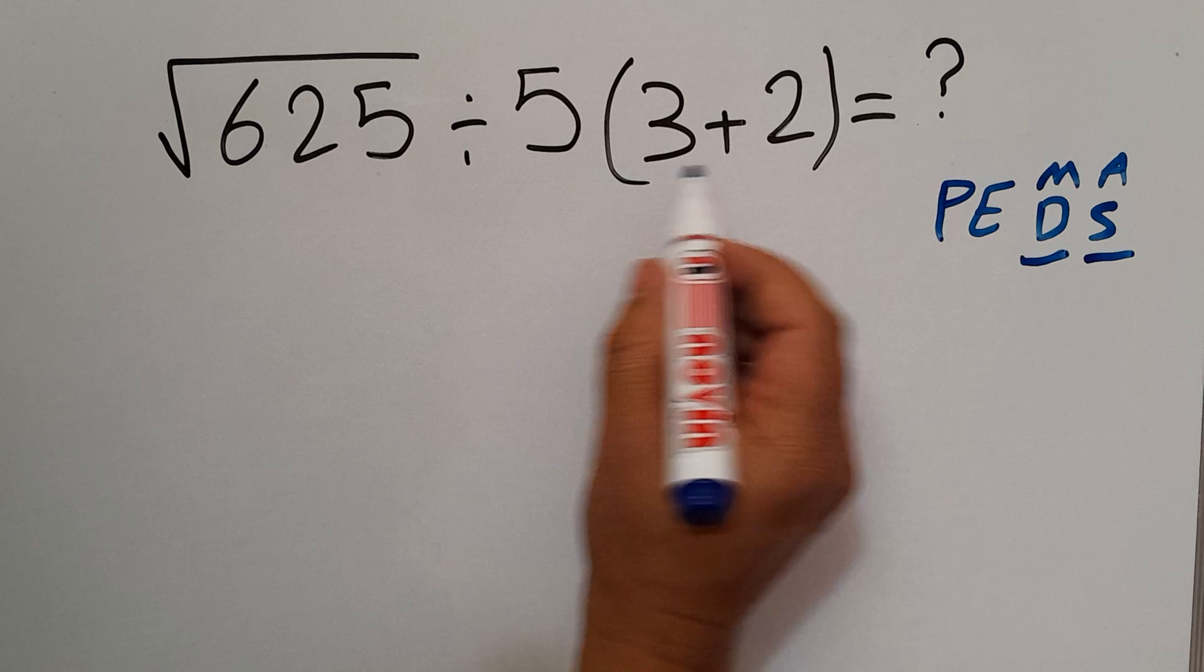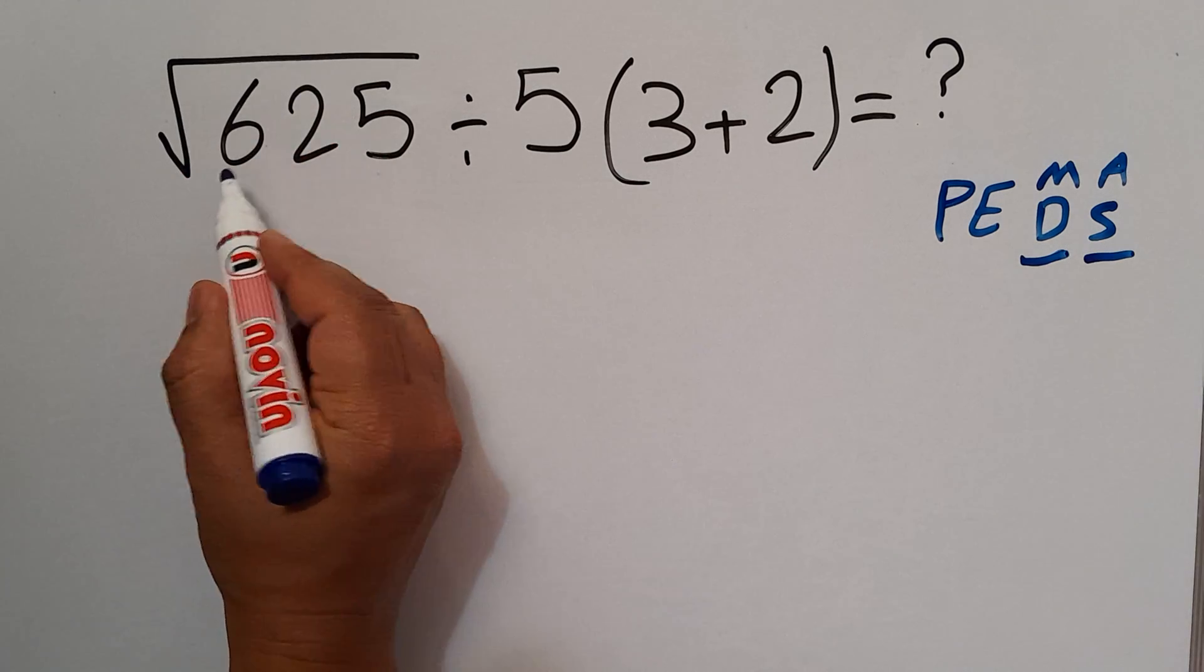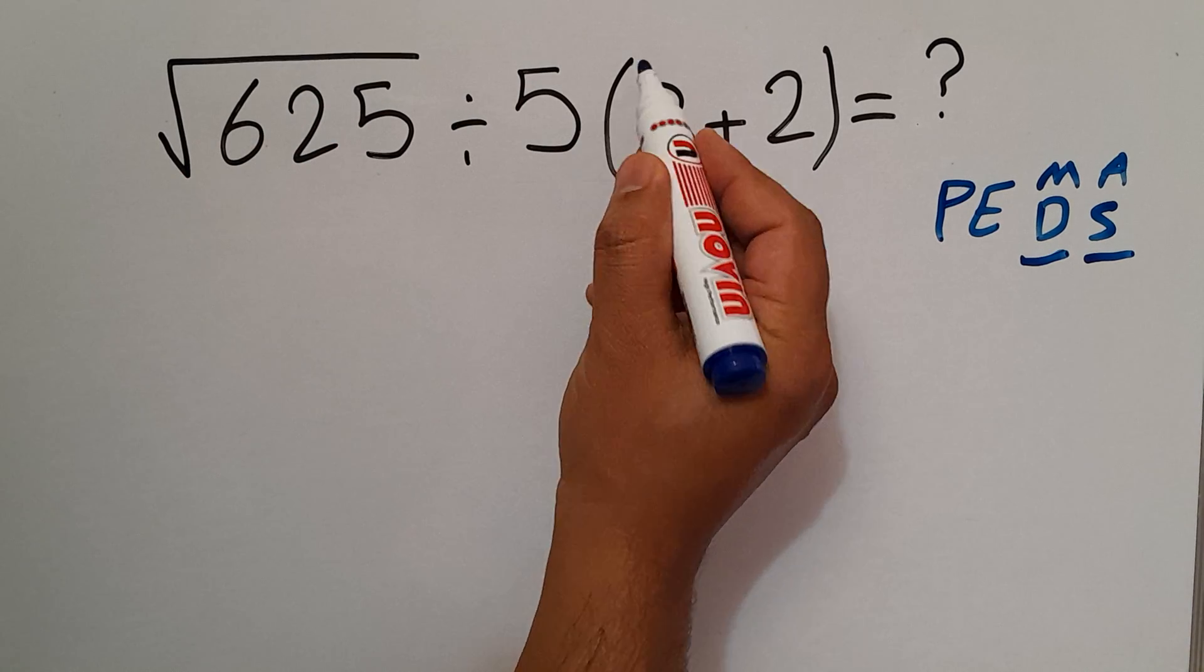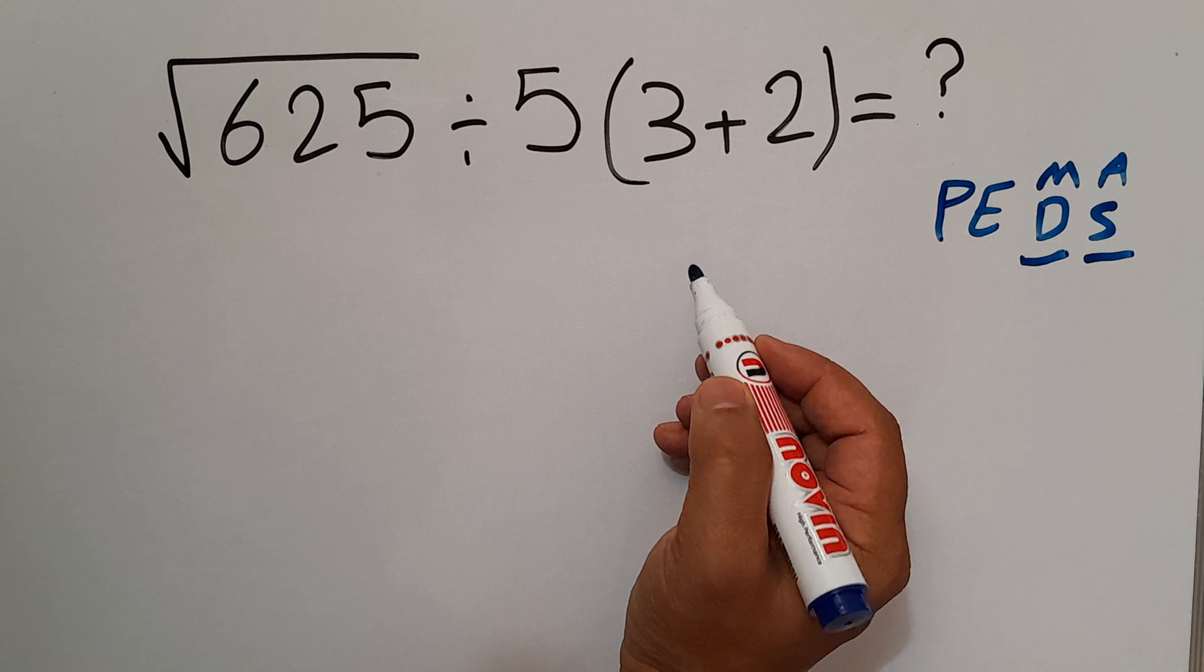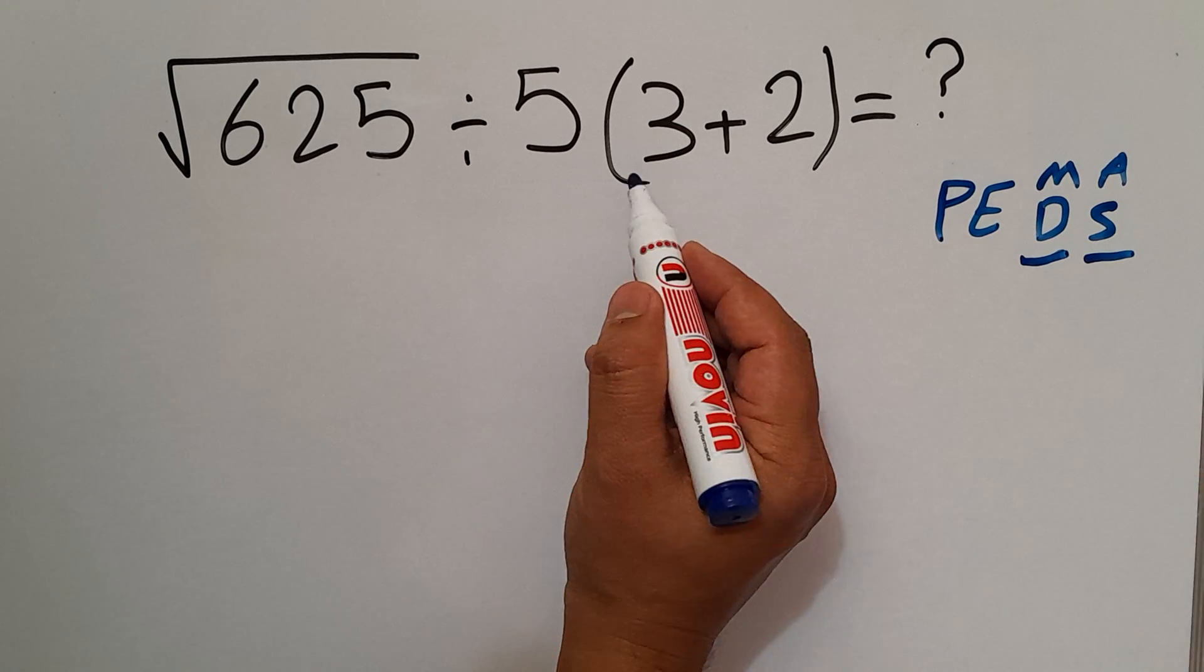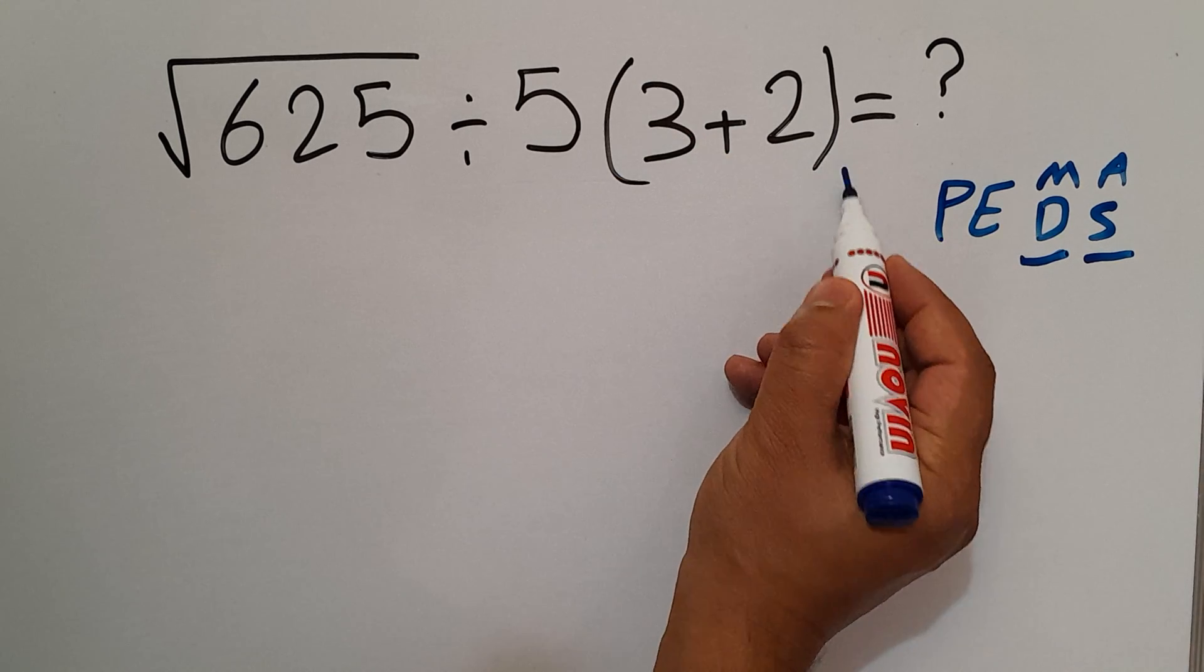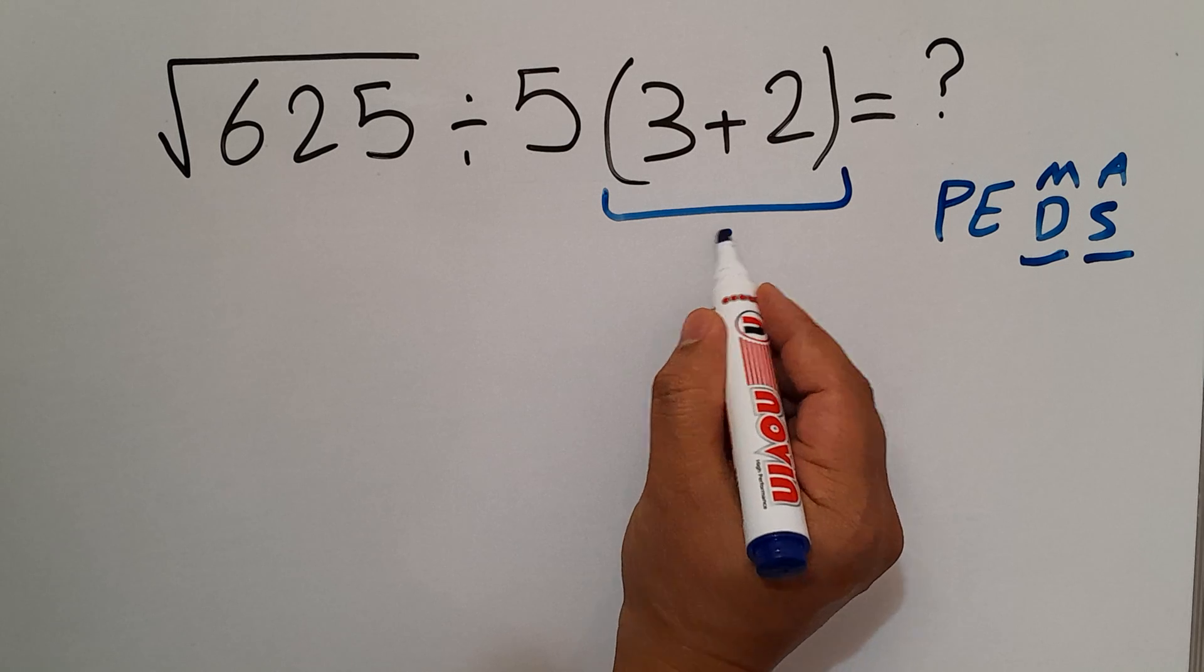Here in this expression we have this exponent, this division, this multiplication and this parentheses. According to this rule, first we do these parentheses: 3 plus 2 equals 5.